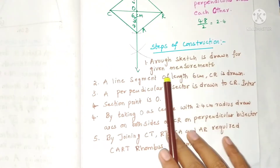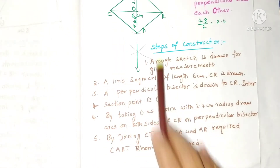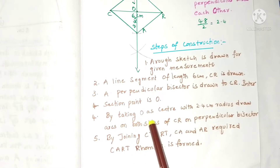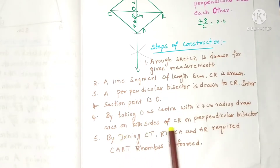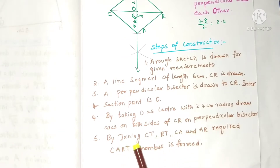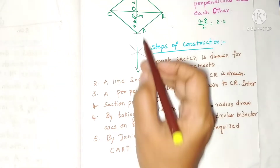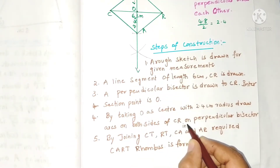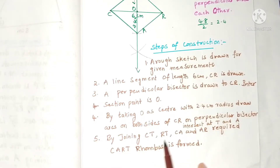Steps of construction: A rough sketch is drawn for the given measurements. A line segment CR of 6 centimeters is drawn. A perpendicular bisector is drawn to CR; the intersection point is O. Taking O as center with 2.4 centimeters radius, arcs are drawn on both sides of CR on the perpendicular bisector, intersecting at T and A. By joining CT, RT, CA, and AR, the required rhombus CART is formed.